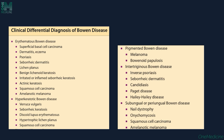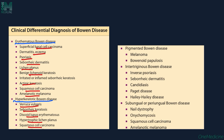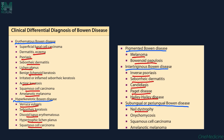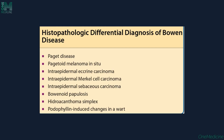The differential diagnosis of Bowen's disease depends on the variant. For the erythematous type: superficial basal cell carcinoma, eczema, psoriasis, seborrheic dermatitis, lichen planus, benign lichenoid keratosis, actinic keratosis, squamous cell carcinoma, and amelanotic melanoma. For the hyperkeratotic type: verruca vulgaris, seborrheic keratosis, discoid lupus erythematosus, hypertrophic lichen planus, and squamous cell carcinoma. For the pigmented variety: melanoma and bowenoid papulosis. For intertriginous Bowen's disease: inverse psoriasis, seborrheic dermatitis, candidiasis, Paget's disease, and Hailey-Hailey disease. For subungual or periungual variety: nail dystrophy, onychomycosis, squamous cell carcinoma, and amelanotic melanoma.